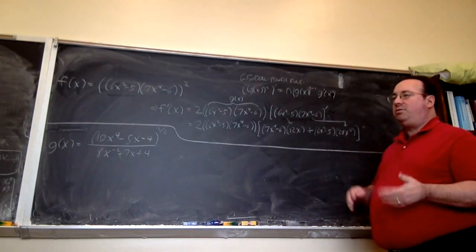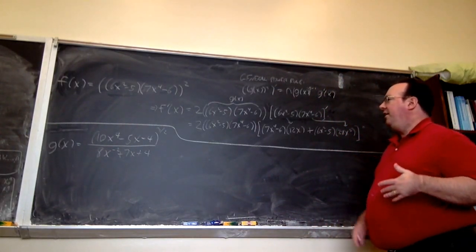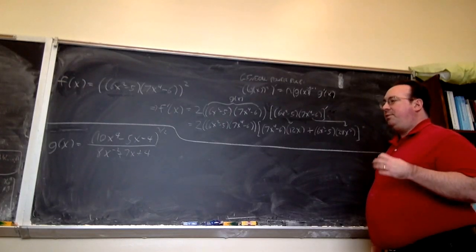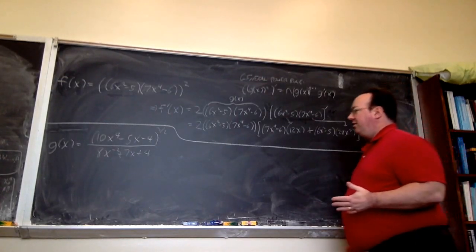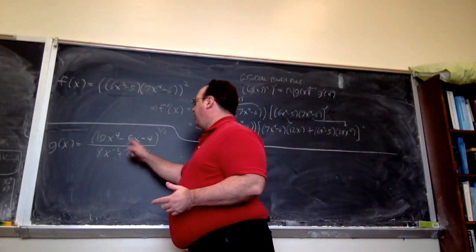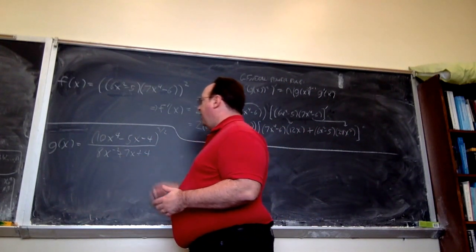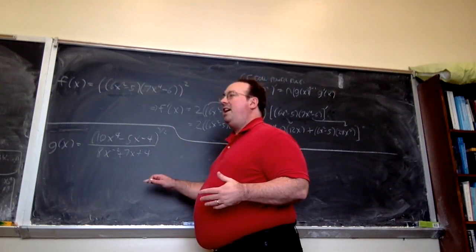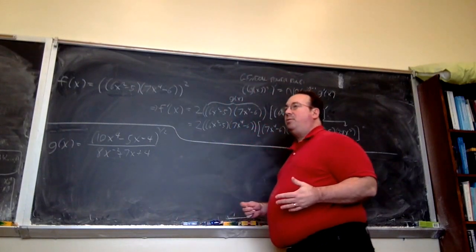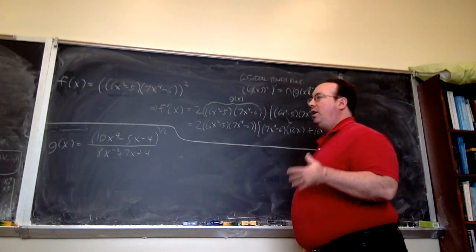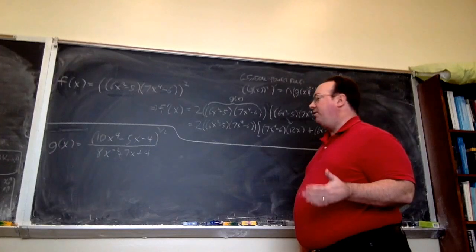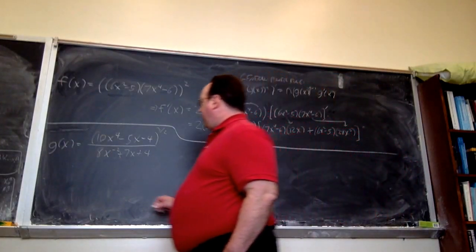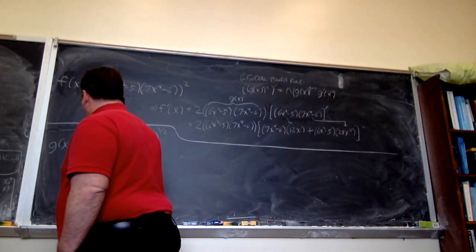With all these rules — product rule, quotient rule, general power rule — as far as which one is applied first, think about how the function is built up from x. We form this function, then raise it to the 3/2, then we have another function. But what is the last thing that happens? We divide. So it's that outermost operation that determines what differentiation rule is applied first.